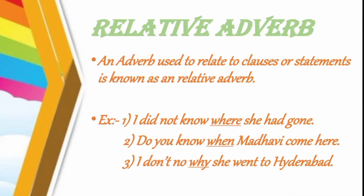The last adverb is the relative adverb. An adverb used to relate to clauses or statements is known as a relative adverb. Examples: 'I did not know where she had gone'; 'Do you know when Madhvi will come here?'; 'I don't know why she went to Hyderabad'. The words where, when, and why are examples of relative adverbs. A relative adverb is used to join two clauses or two statements.